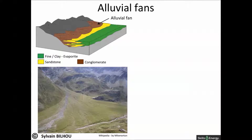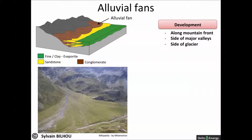Alluvial fans can provide reservoir facies. They are deposited along the front of mountains, along the side of major valleys, or at the side of glacier ice. The fans commonly develop into low-angle half-cones.